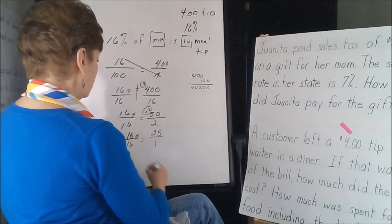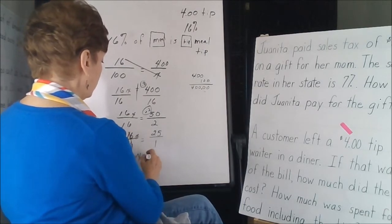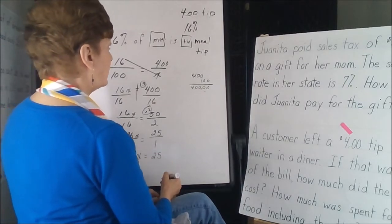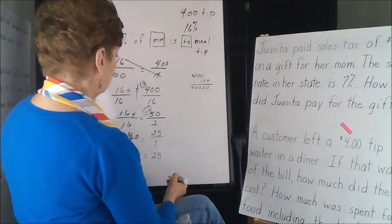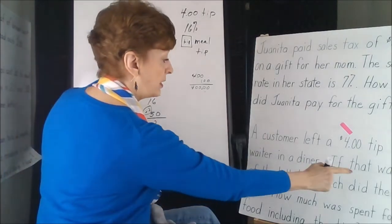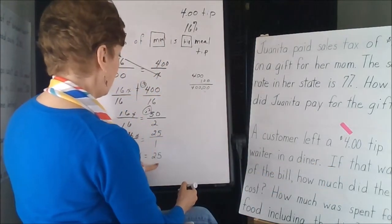All right, so x, then, would equal 25. So the tip, the meal cost, the meal is what we don't know. How much did the meal cost? The meal cost $25.